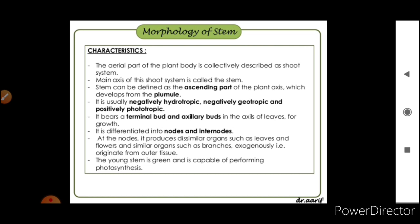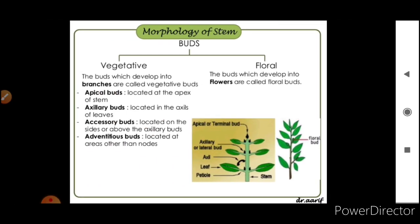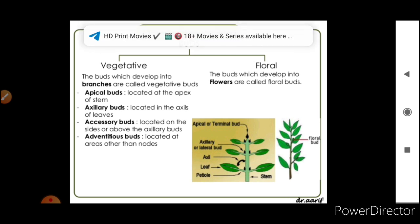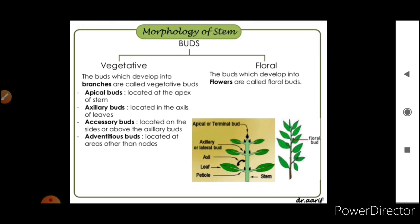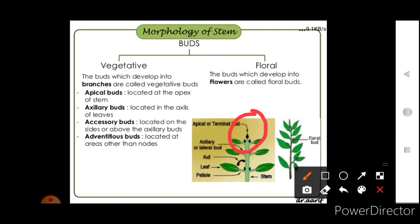Buds in the stem can be vegetative or floral. Buds that develop into flowers are called floral buds, and buds that develop into branches are called vegetative buds. Apical buds are located at the apex of the stem. Axillary buds are located in the axil of the leaves. Accessory buds are located on the sides or above the axillary buds, and adventitious buds are located at areas other than the nodes.